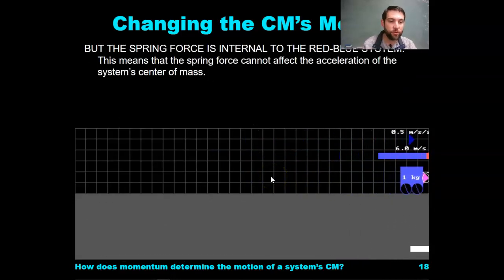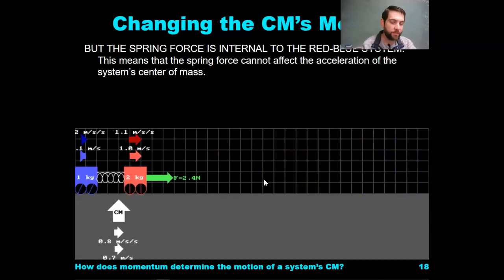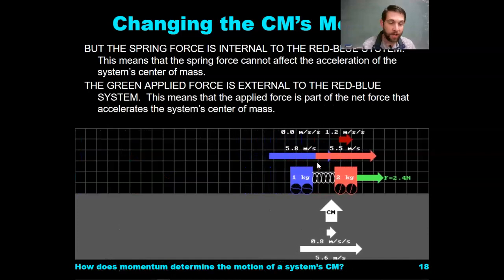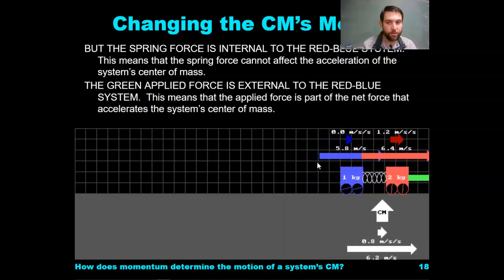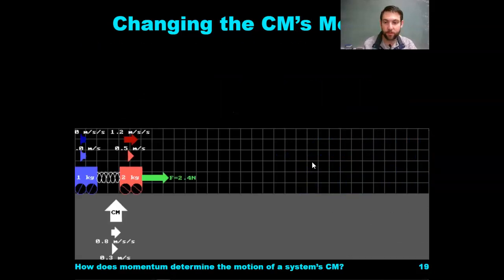The spring force is internal to the red-blue system, so that means the spring force cannot affect the acceleration of the system's center of mass. The green applied force is external to the red-blue system, so that means this applied force is part of the net force that will accelerate the system's center of mass.